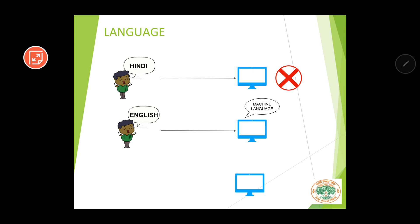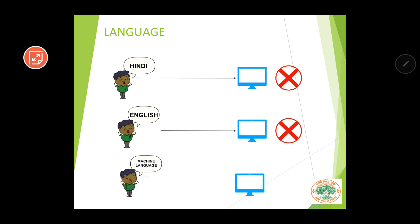In both those cases, communication will be unsuccessful. But suppose you are speaking machine language to the computer — can the computer understand machine language? Yes, the computer can understand machine language. Therefore, your communication will be successful. Communication being successful means whatever you are saying to the computer can be understood by the computer.